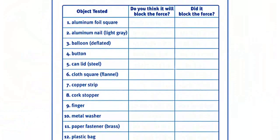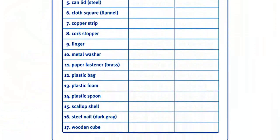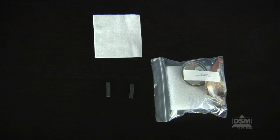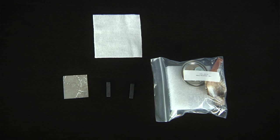To prepare for the activity, make a copy of Activity Sheet 2 for each student. Each team of four students will need two small magnets, a bag of magnetic and non-magnetic objects, a small square flannel cloth, and a small square of aluminum foil.